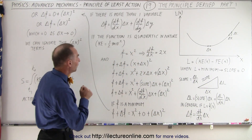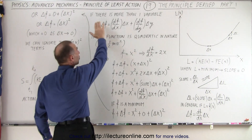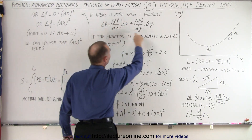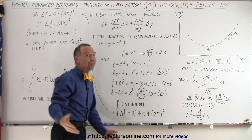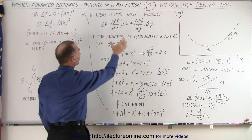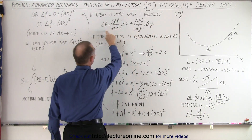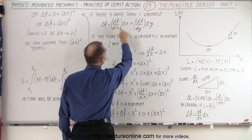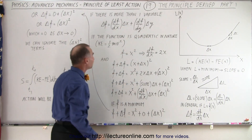So where do we go from there? Well, if there's more than one variable, that will now be written as follows. We could potentially have three variables in space, and then we'd have three of these terms. It would simply be the sum of the derivative in each direction times the change in that direction.